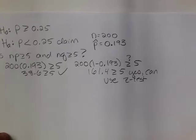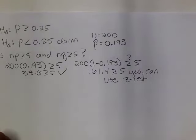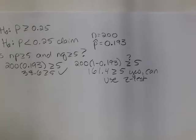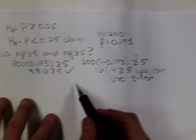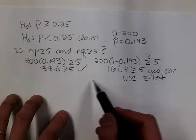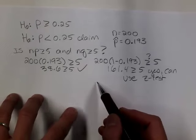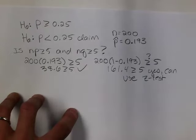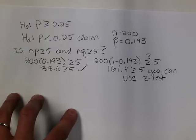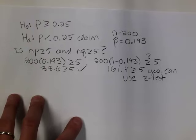We're not using the first z-test option in the calculator — we're using the one-proportion z-test. This just gives us the justification to use the z-distribution for the test statistic and the critical value.